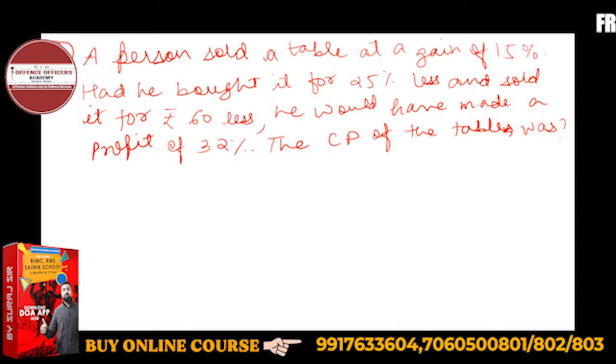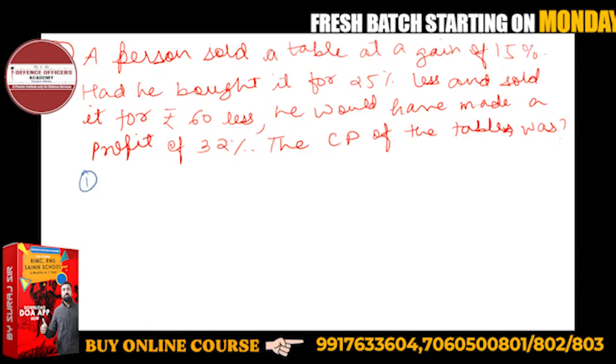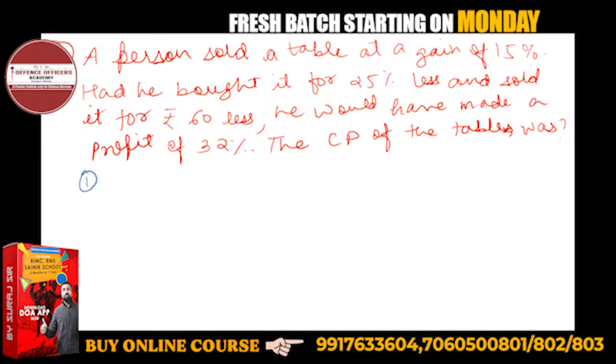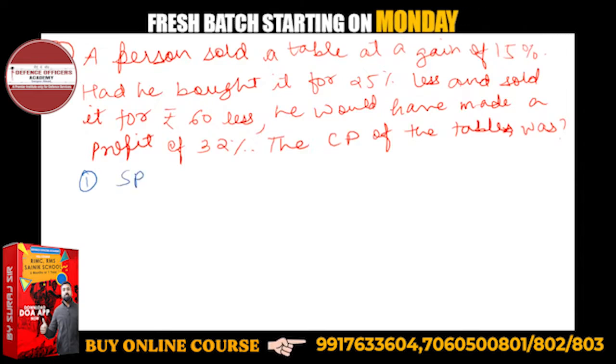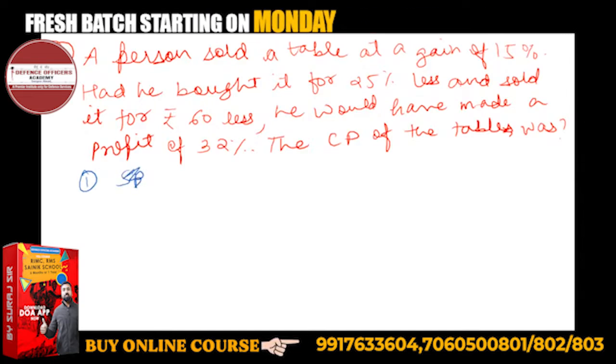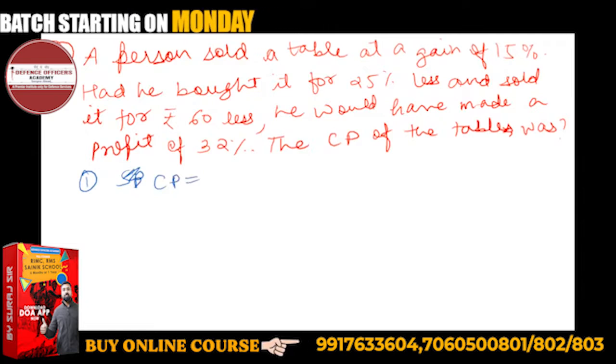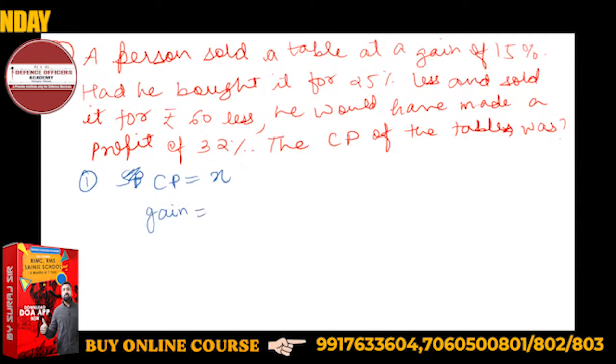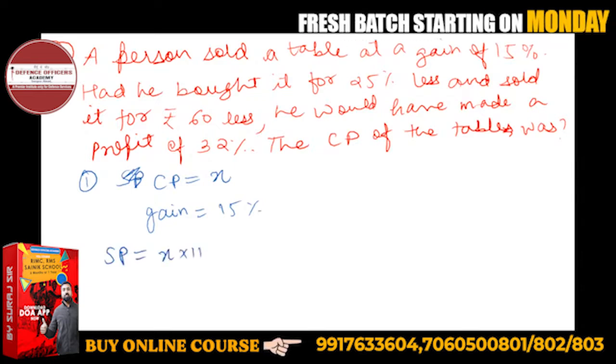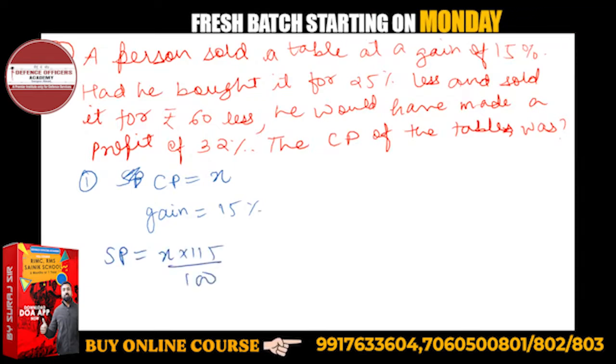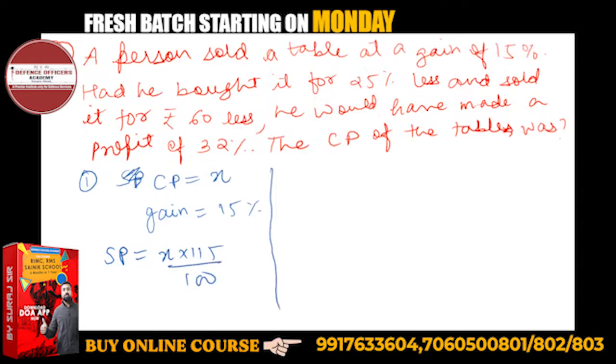This person sold a table at a gain. In the first condition, suppose the CP was x. So how much did he sell it for? With 15% gain, the SP will be x plus 15 upon 100 into x.